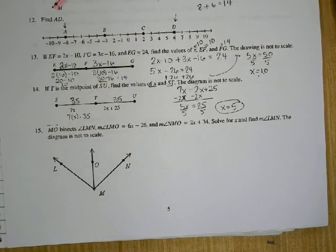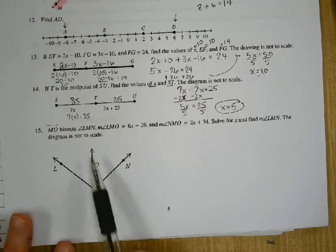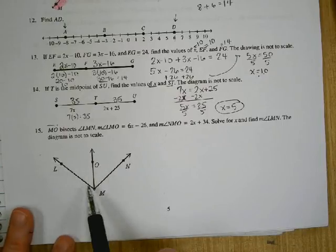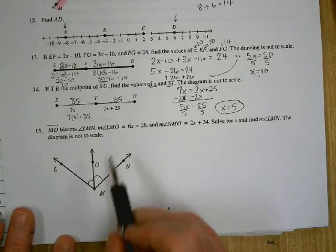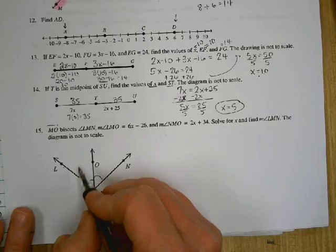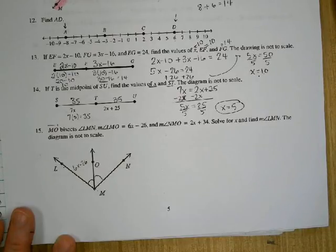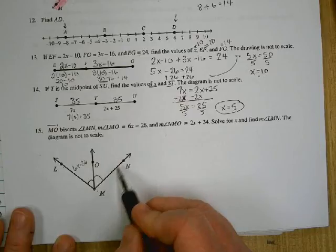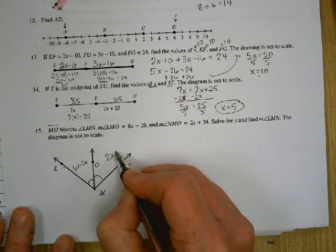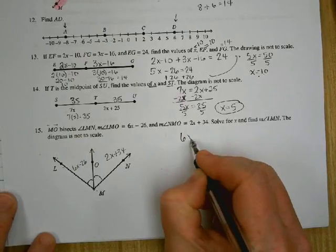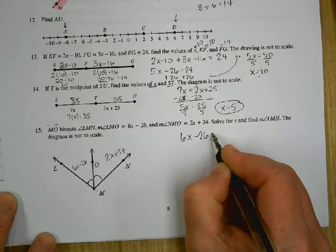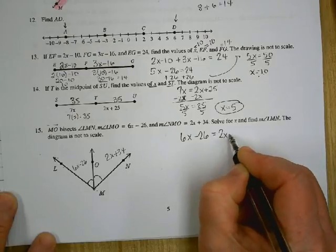So 15 says MO bisects angle LMN. So it cuts it into two equal angles. The measure of LMO is 6x minus 26. The measure of NMO is 2x plus 34. So those two smaller angles have to be the same size. So we set 6x minus 26 equal to 2x plus 34.